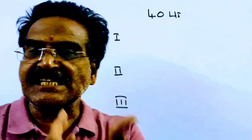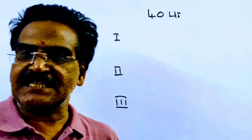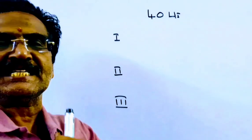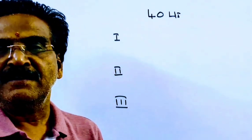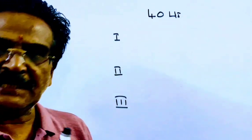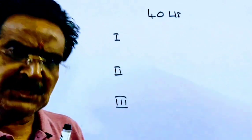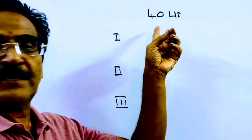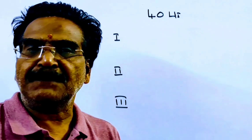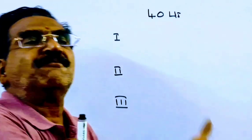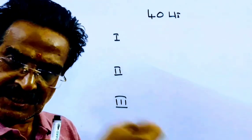The initial quantity of milk is 40 liters, and every time 4 liters of milk or mixture is drawn and 4 liters of water is added. Friends, 4 is 1 tenth of 40, which means every time 1 tenth of the milk or mixture is drawn.